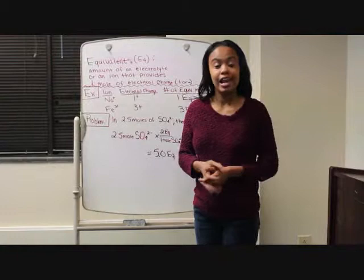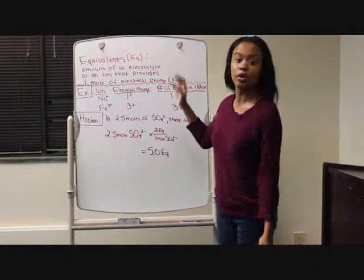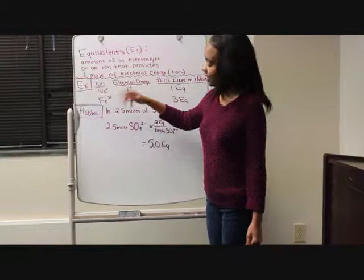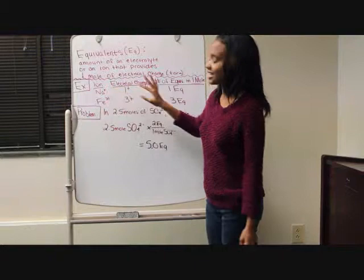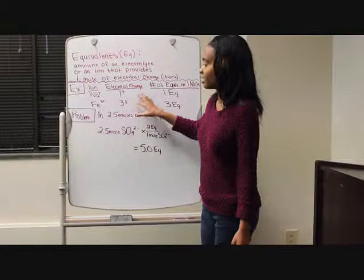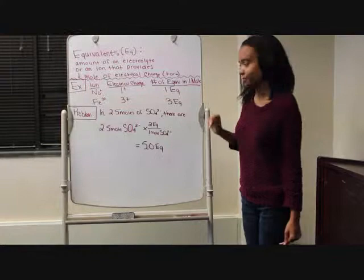My name is Kia Harris and I will also be discussing equivalence. Equivalence is the amount of an electrolyte or ion that provides one mole of electrical charge, which can be either positive or negative. For example, sodium has an electrical charge of 1, so the number of equivalents in 1 mole is 1. Iron has an electrical charge of 3, so the number of equivalents in 1 mole is 3.